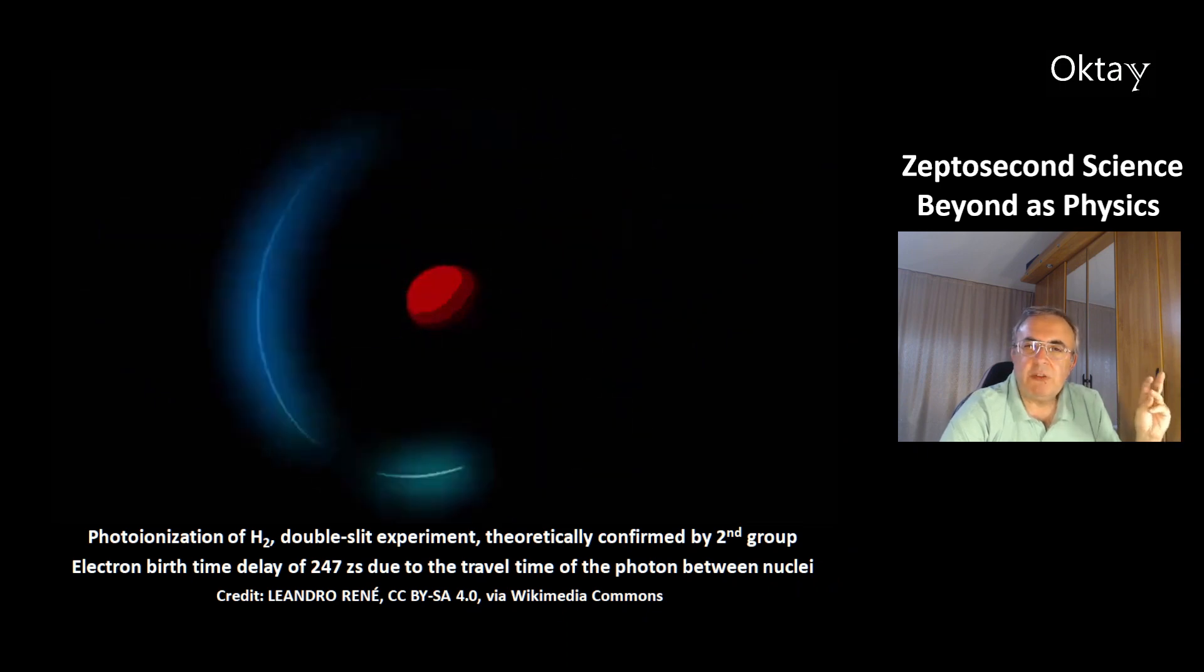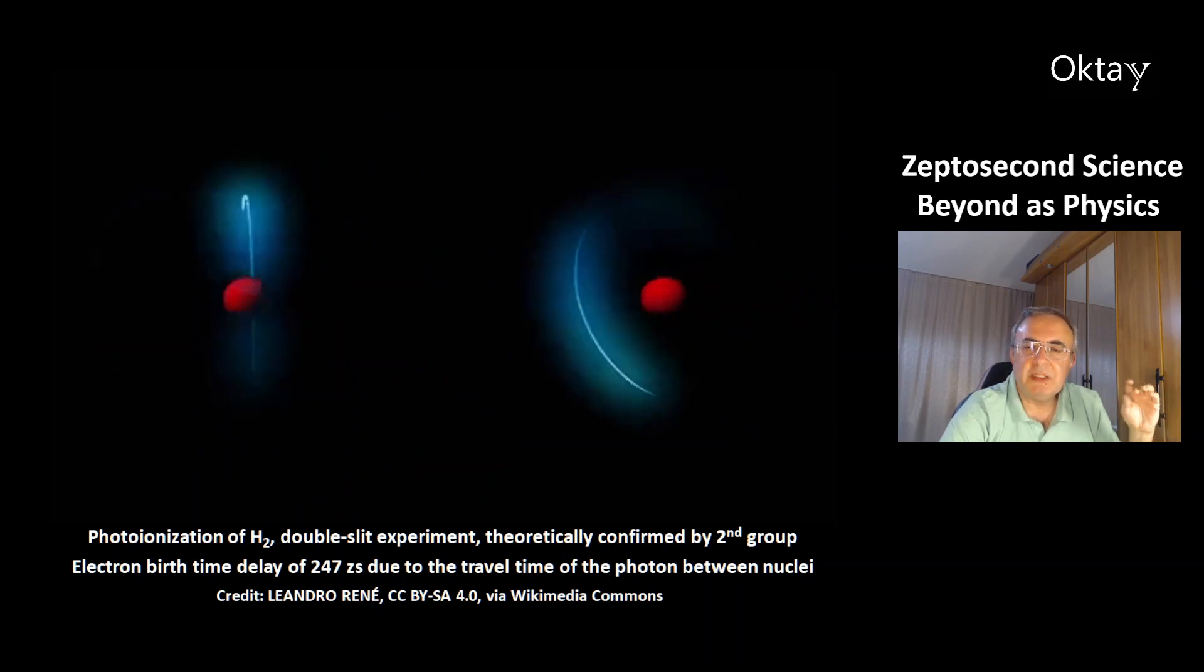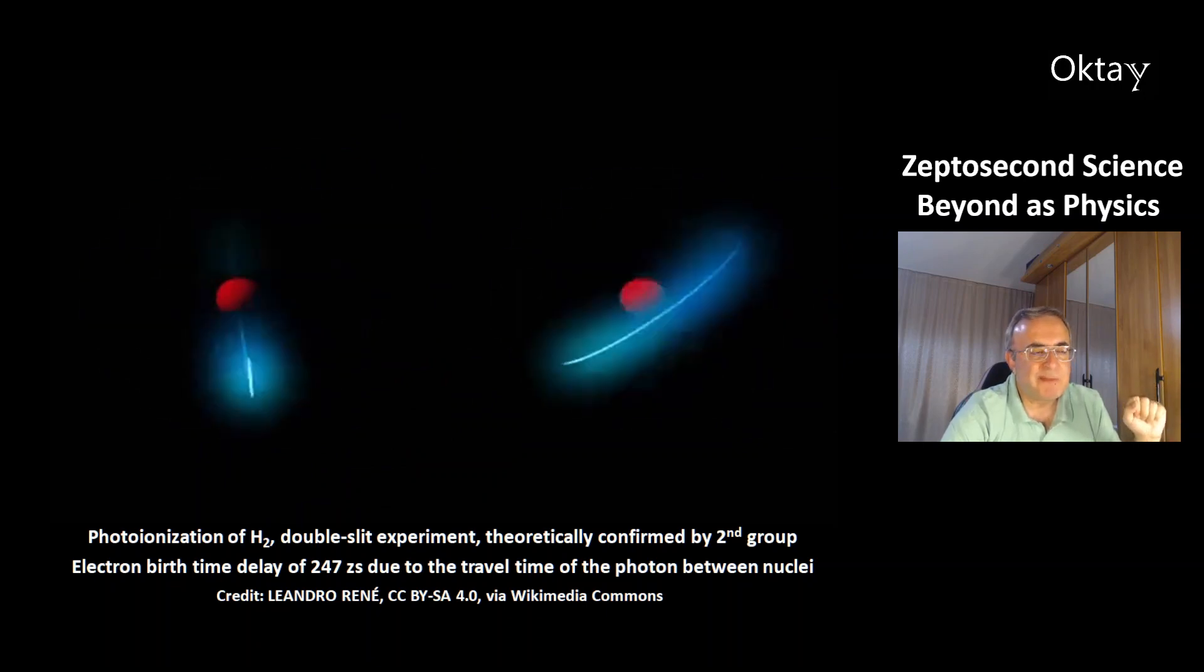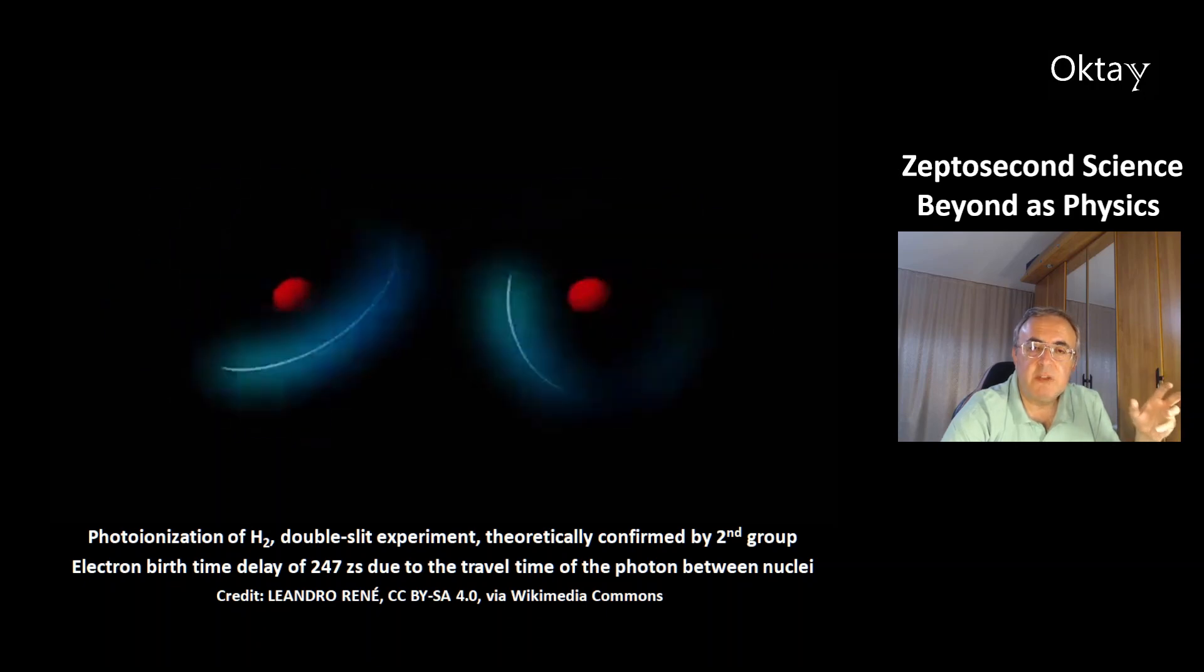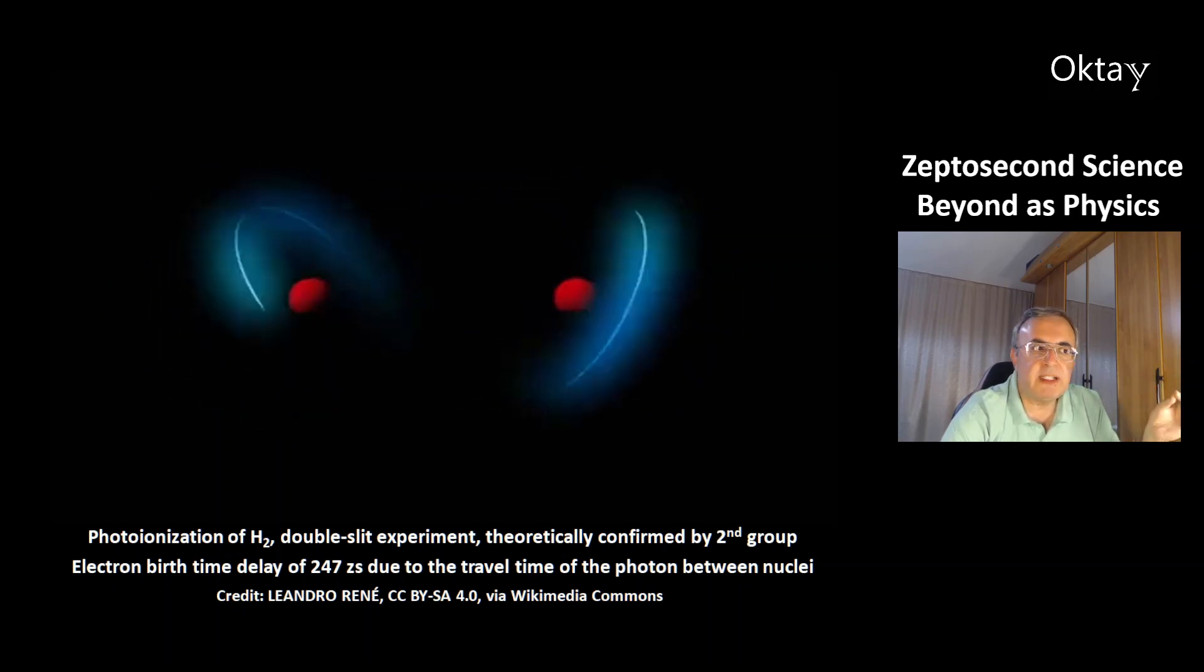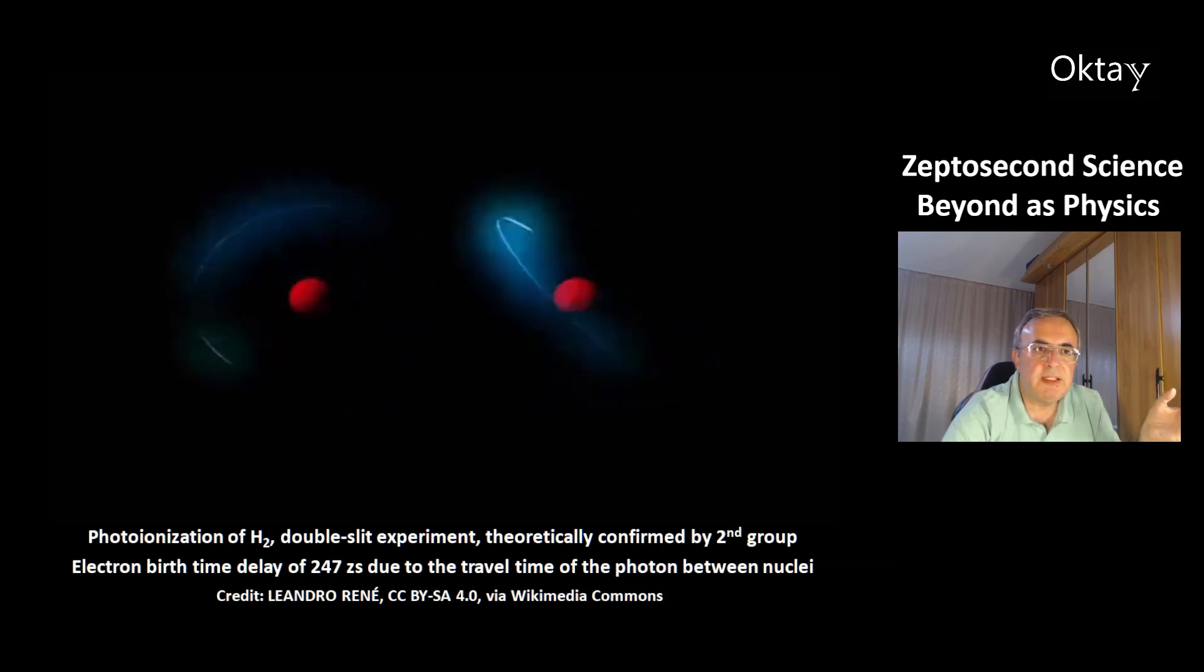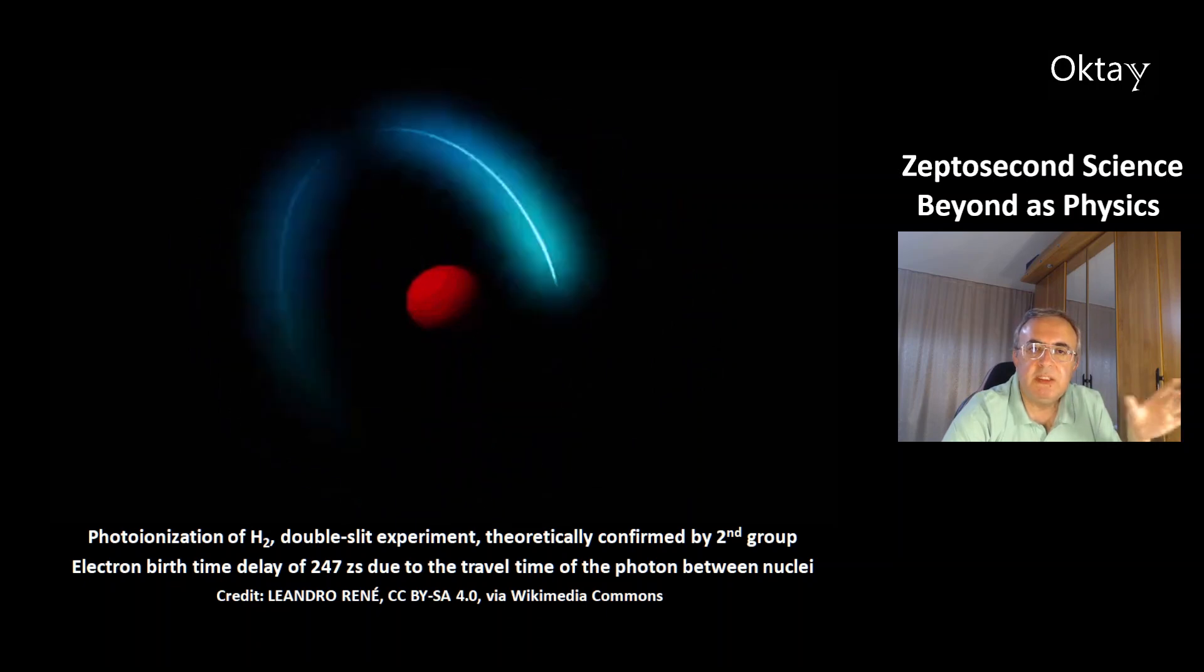This is a model of the molecule H2, that's the photo-ionization in a double-slit experiment. And now a second group of scientists has confirmed theoretically this result, that's the electron burst time delay of 247 zeptoseconds due to the travel time of the photon between the two nuclei.